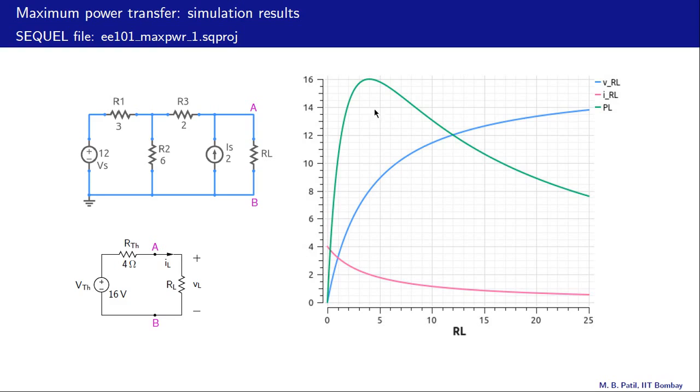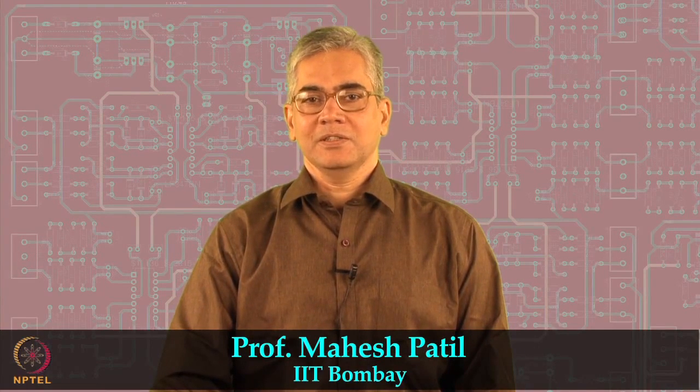This agrees with our calculation. To summarize, we have learned how to convert the Thevenin form into the Norton form and vice versa. We have also seen the maximum power transfer theorem for circuits, and that maximum power is transferred when the load resistance is equal to the Thevenin resistance.